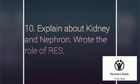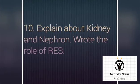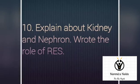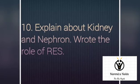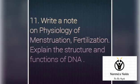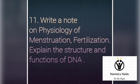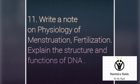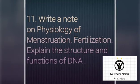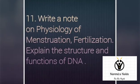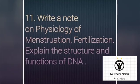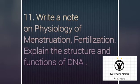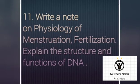The tenth question is: explain about the kidney and nephron with neat diagrams, and also write the role of the reticuloendothelial system. The last question is: write a note on the physiology of menstruation and fertilization, and also explain the structure and functions of DNA.